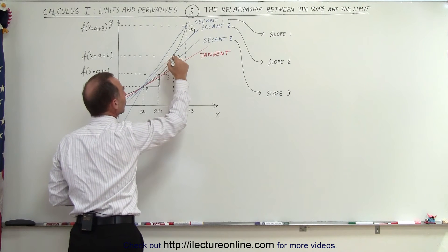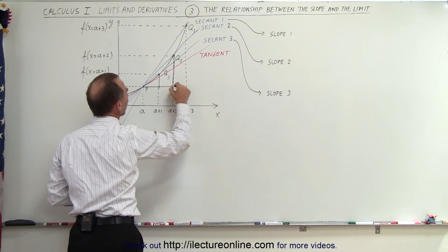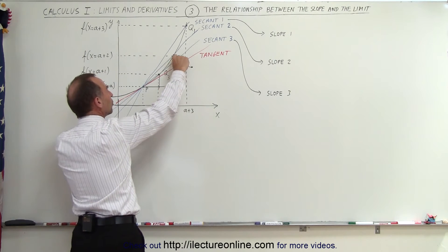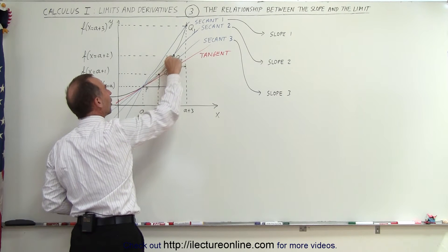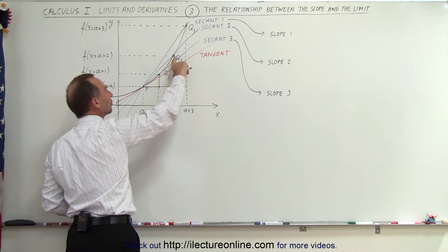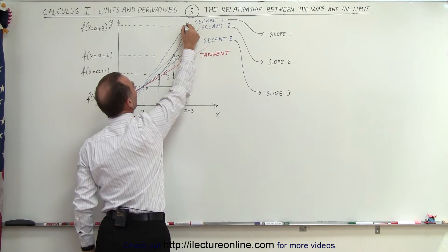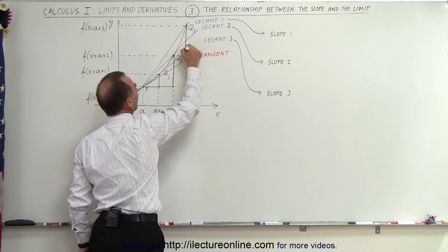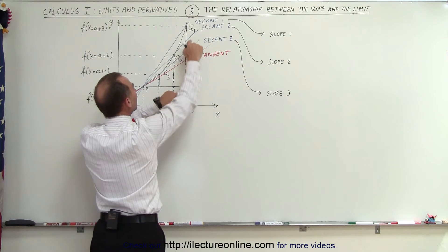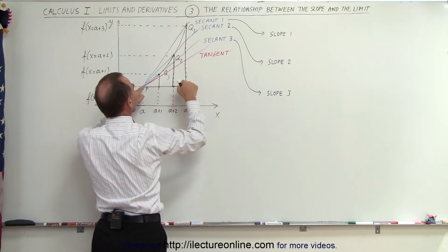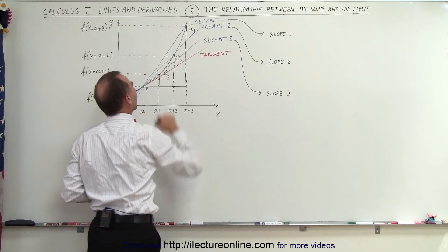We can do the same for Q2 — if we draw a vertical line, we can see the ratio between the rise and the run, and the slope of this secant line is equal to that rise divided by that run. And if we do the same with the third point, Q1, this is the run and this is the rise, so the ratio of rise over run gives us the slope of that third secant line.